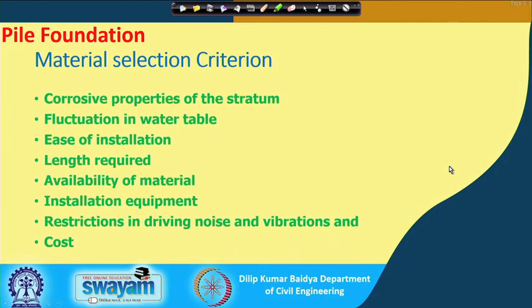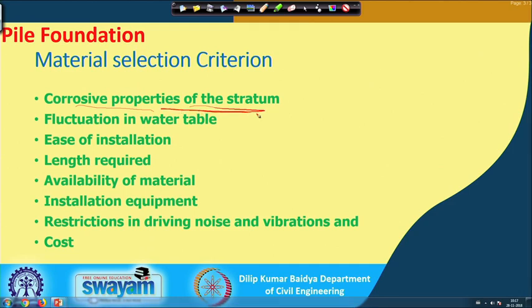Pile can be classified based on material as timber pile, steel pile, concrete pile, and composite pile. While selecting the material, you have to consider the corrosive properties — for example, steel can corrode under various weather conditions. You must also consider fluctuation in the water table; if there is too much fluctuation, timber piles may be difficult because wetting and drying can cause the wood to decompose.